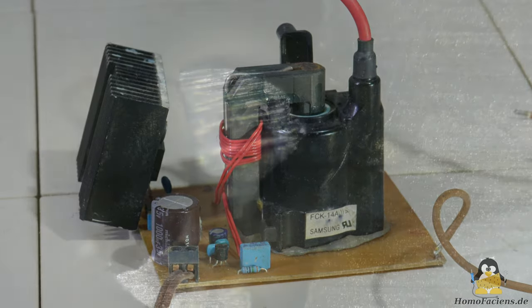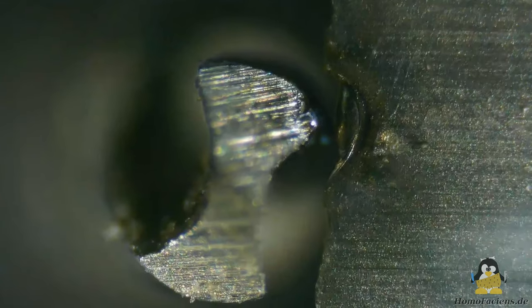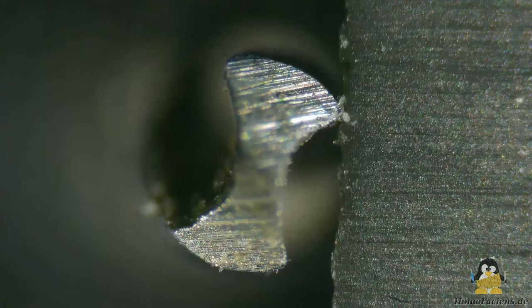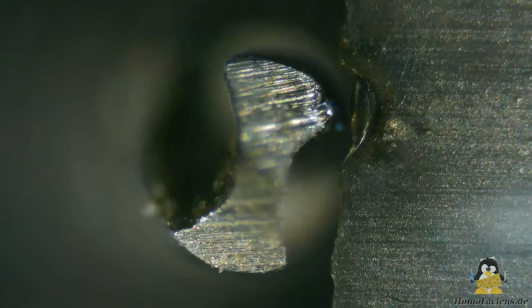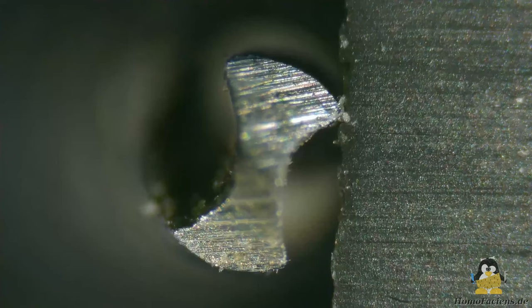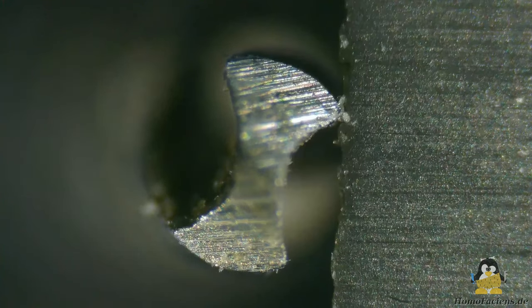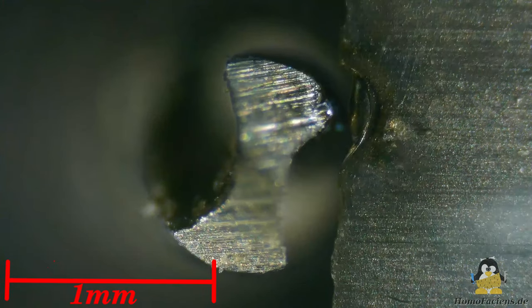So let's take another look at the result of the first spark. That spark not only melted the metal of the razor blade, but also that of the drill bit. In the previous videos I had already mentioned that sparks work in both directions. The resulting gap between both objects after the spark occurred is about 0.06mm. The edge of the razor blade has been eroded over a length of about 0.5mm.